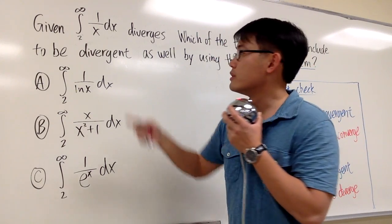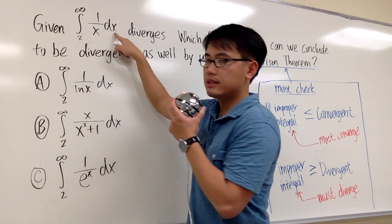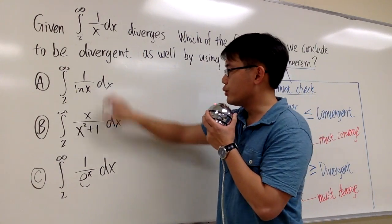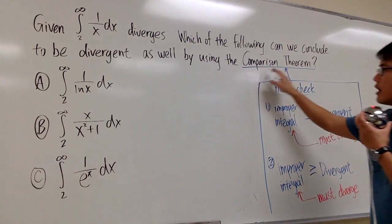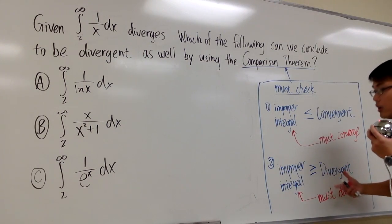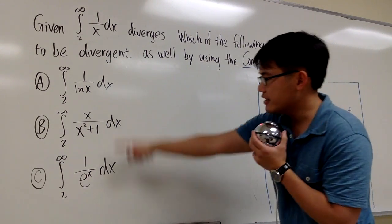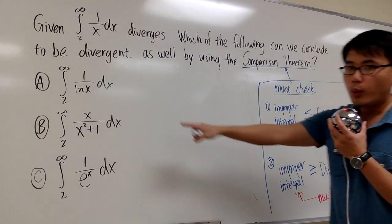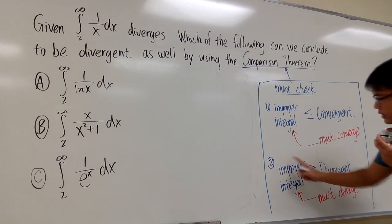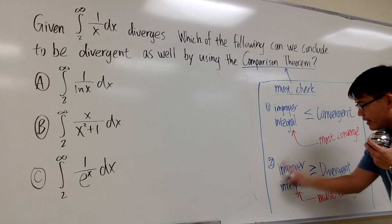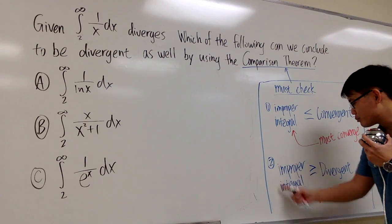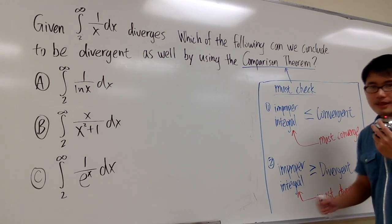This time we have a divergent integral, the integral from 2 to infinity of 1/x dx. We would like to know which of three improper integrals also diverges, and we are going to do this based on the given information together with the comparison theorem. Because we are using a divergent integral, we are talking about the second situation. The strategy is to check which improper integrals are greater than or equal to a divergent integral we already know — if so, that integral must diverge as well.